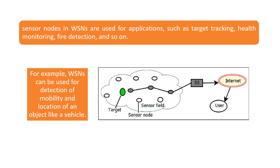We can see the vehicle, which is the target, and these sensor nodes collect the information of the target and send it to the base station, which in turn analyzes that and sends it to the user. In this case, the tracking of the vehicle is done by WSNs. So WSNs are used for these kinds of applications.